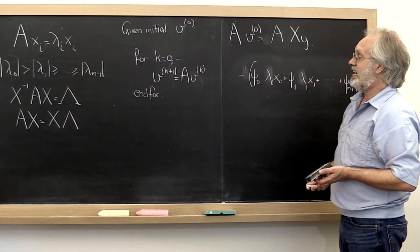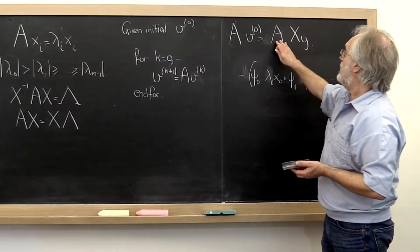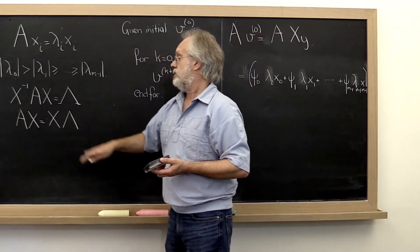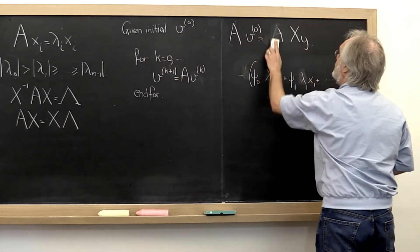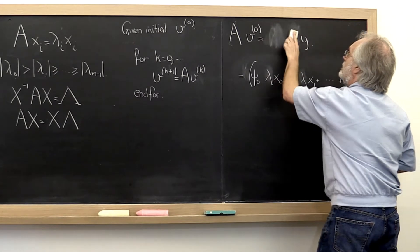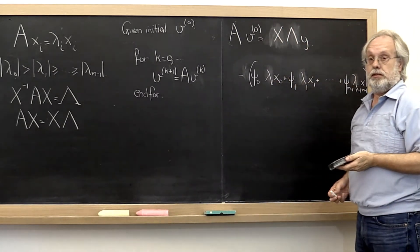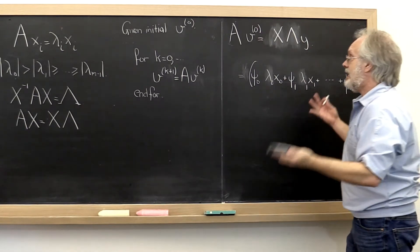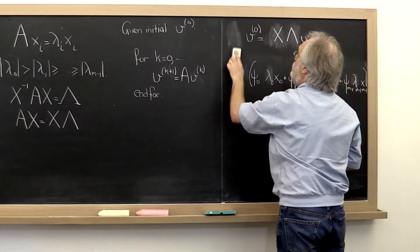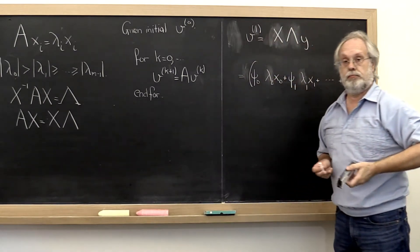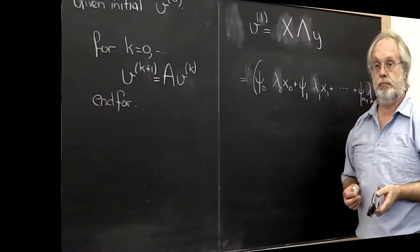Up here, we can say the exact same thing by recognizing that A times x can be replaced by x times lambda. At that point, we have computed our vector v1.